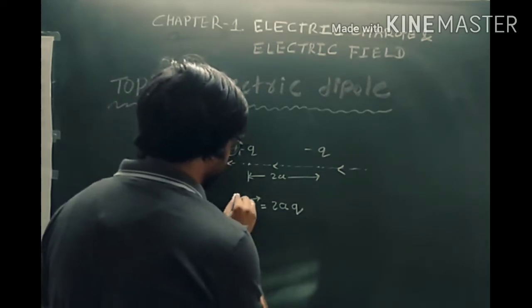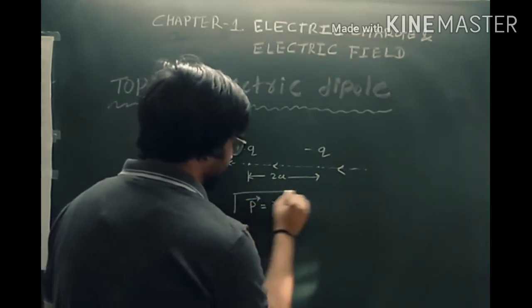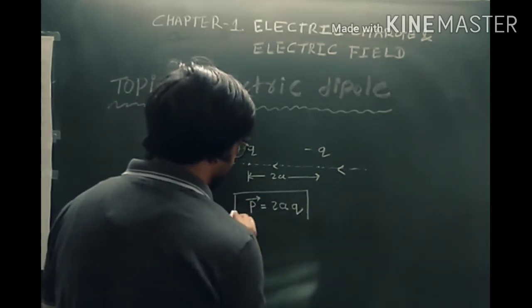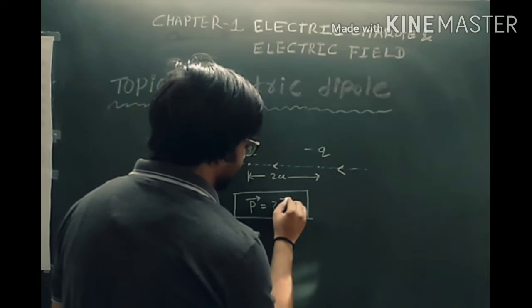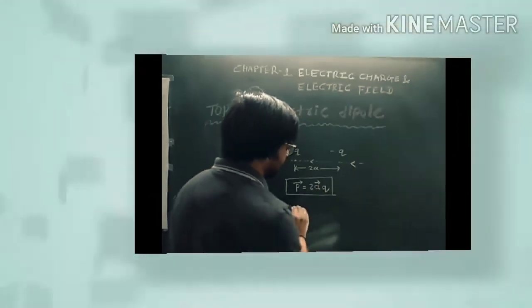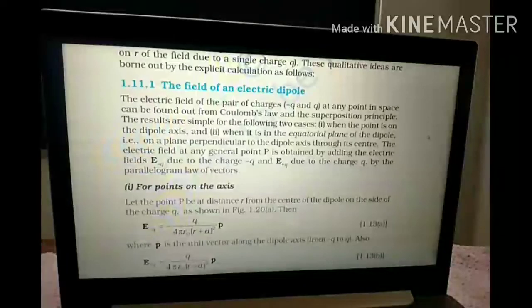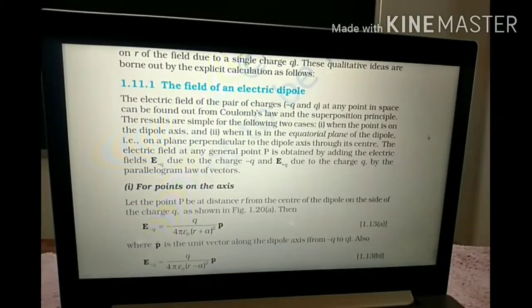We can write the dipole equation as: vector P is equal to the distance between two charges, 2A, multiplied by the charge of the dipole. That is our dipole equation.